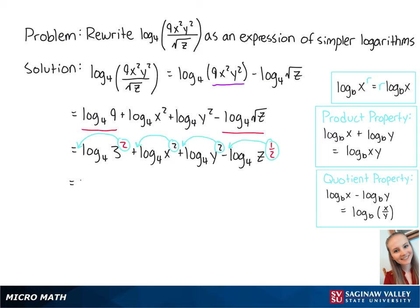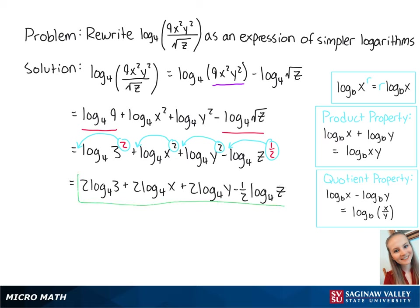This becomes 2 times the log base 4 of 3 plus 2 times the log base 4 of x plus 2 times the log base 4 of y minus one-half times the log base 4 of z. This cannot be extended any further, so this is the final answer.